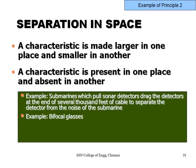Separation in space: a submarine pulls a sonar detector on several thousand feet of cable to separate the detector from the submarine's own noise. If it were held close, the sonar would detect the submarine's own sounds. Bifocal glasses are another example — looking straight gives one power, looking at an angle gives a different power. This is also separation in space.